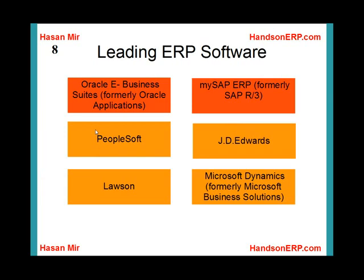So who are the leading ERP vendors? Oracle and SAP are the largest players. Oracle's software is called Oracle E-Business Suite — it used to be known as Oracle Applications. SAP's software is called MySAP ERP — it used to be known as SAP R3. PeopleSoft and JD Edwards are also big players in the ERP market, but Oracle purchased PeopleSoft, so now PeopleSoft is also managed by Oracle Corporation.